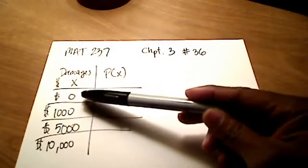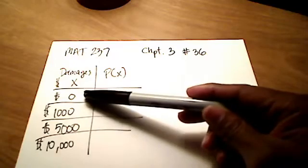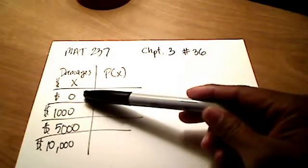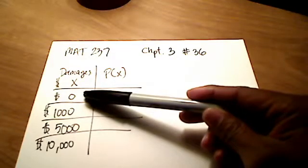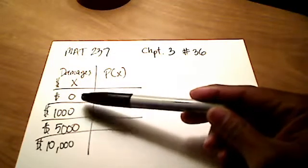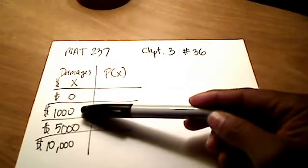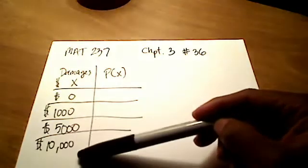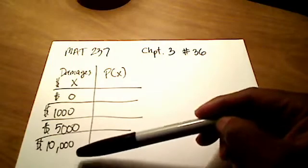So we could have an accident where there is $0 worth of damage, so maybe two cars barely touched each other, a car bumped into a wall or something, and there really was no damage at all, or $1,000 worth of damage in an accident, or $5,000, or even up to $10,000 worth of damages.